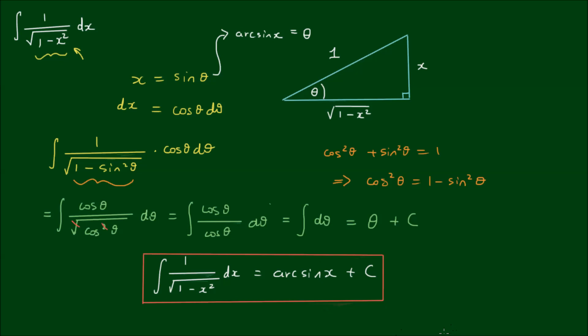All right, so let's check if this result makes sense by having a look at it graphically. So let's have the function f of x equals 1 over the square root of 1 minus x squared, and let's have its primitive function or its antiderivative as F of x equals arc sine of x. Let's set the integration constant to 0 for now.